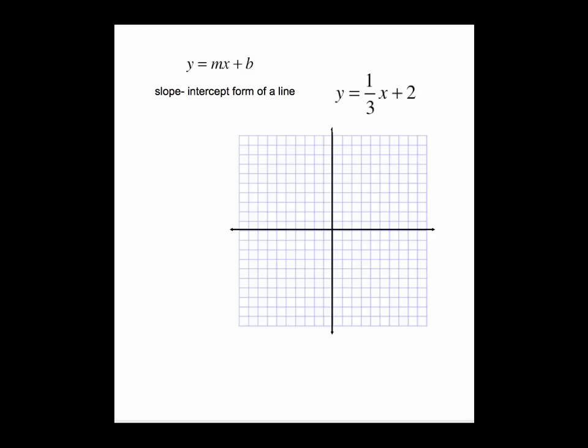This video is on graphing lines using the slope-intercept form of a line. y equals mx plus b is your slope-intercept form of a line. The m is your slope and the b is the y-intercept. Those are the only two pieces of information you need to be able to graph a line.